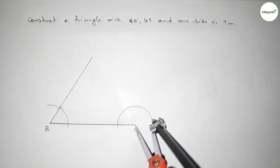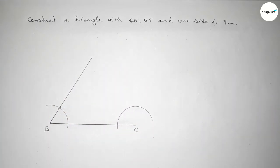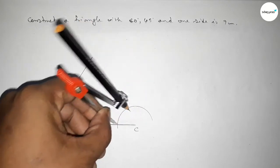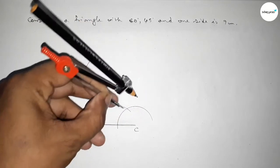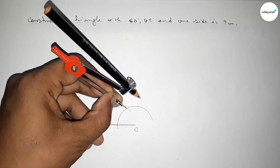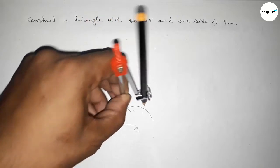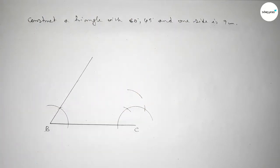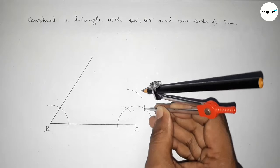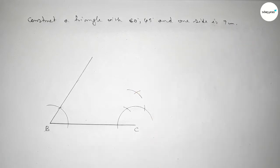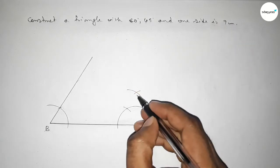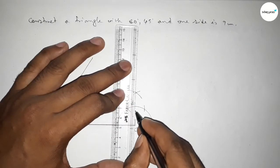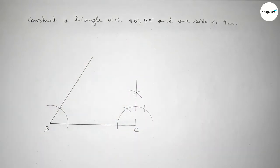With the same length, putting the compass here and cutting here, then putting the compass here and cutting here, and drawing an arc here. Putting the compass here with the same length and cutting here, so both the curves intersect at a point. Now joining this to get a 45 degree angle.